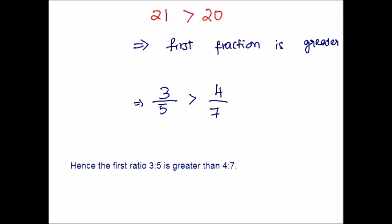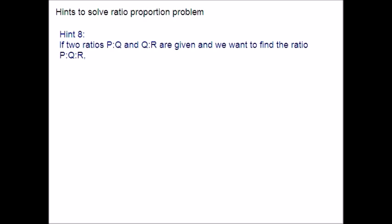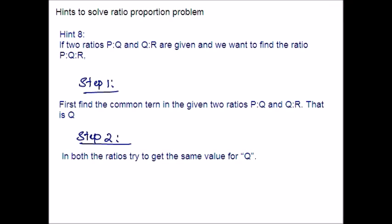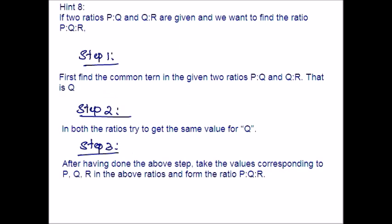Hint 8: This hint is helpful when two ratios are given and we want to find the combined ratio P is to Q is to R. Step 1: Find the common term in the given ratios P:Q and Q:R — the common term is Q. Step 2: In both ratios, try to get the same value for Q. Step 3: After completing Steps 1 and 2, take the values corresponding to P, Q, R and form the ratio P is to Q is to R.